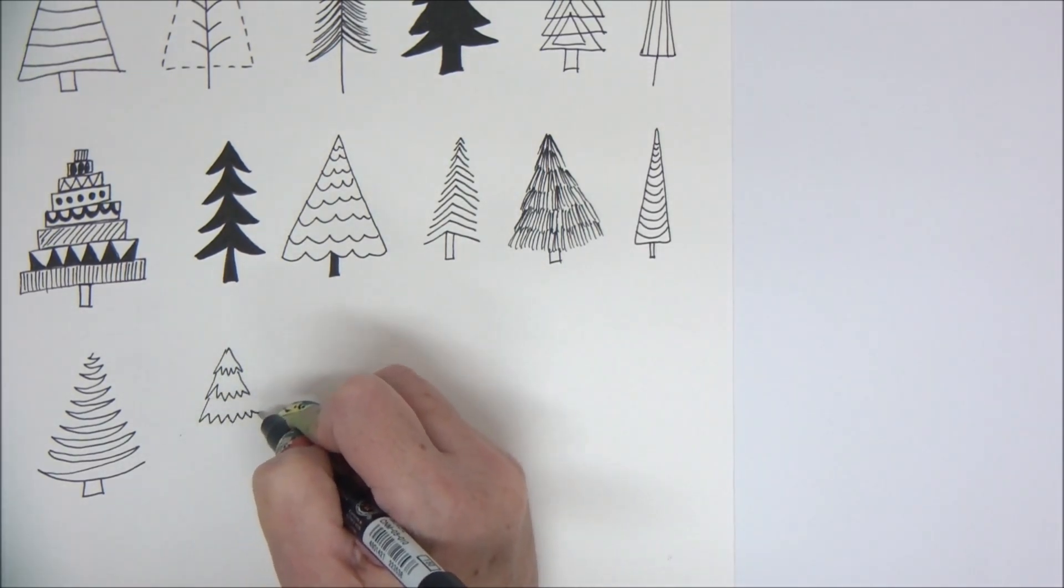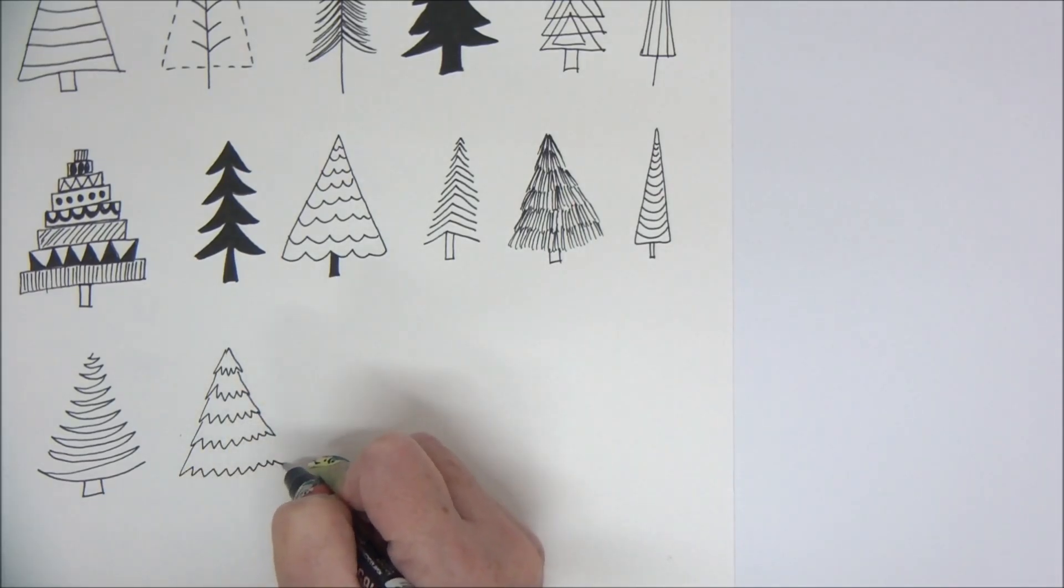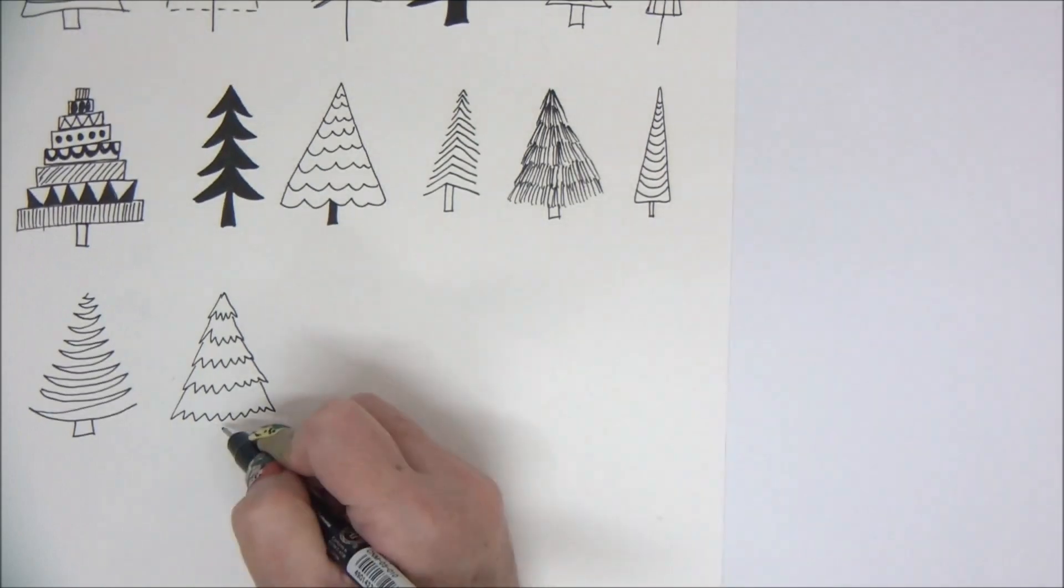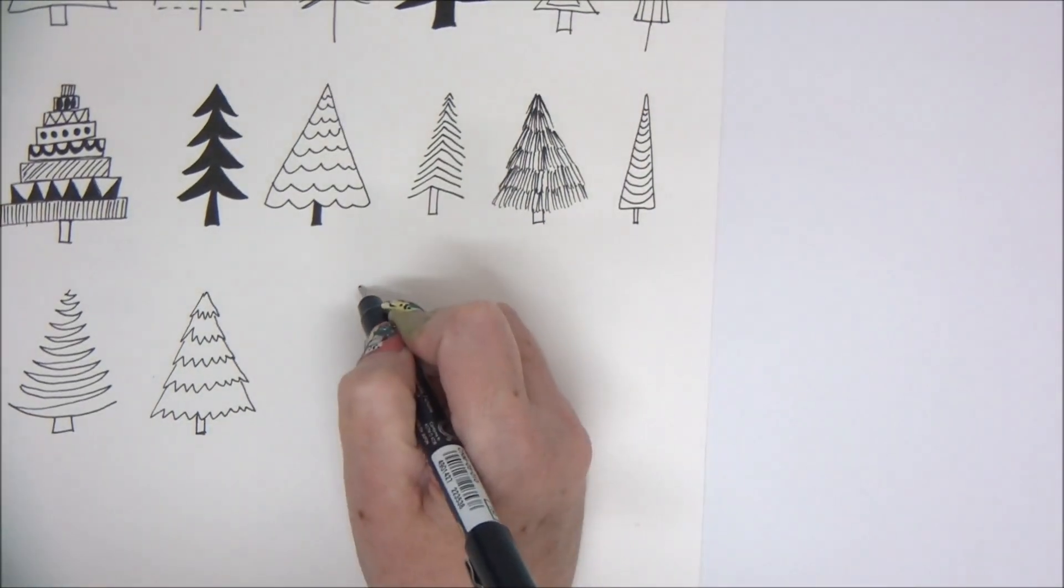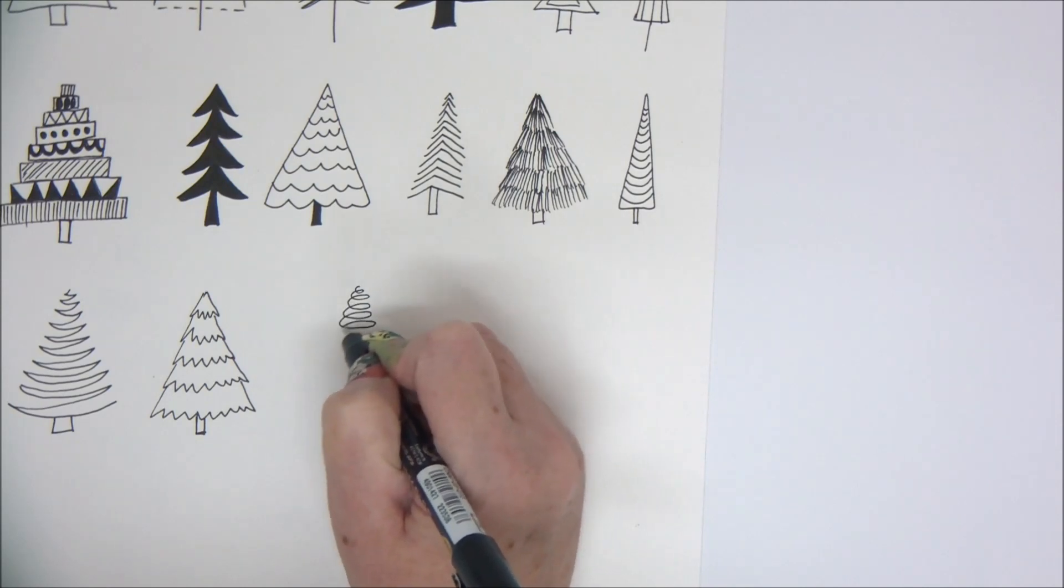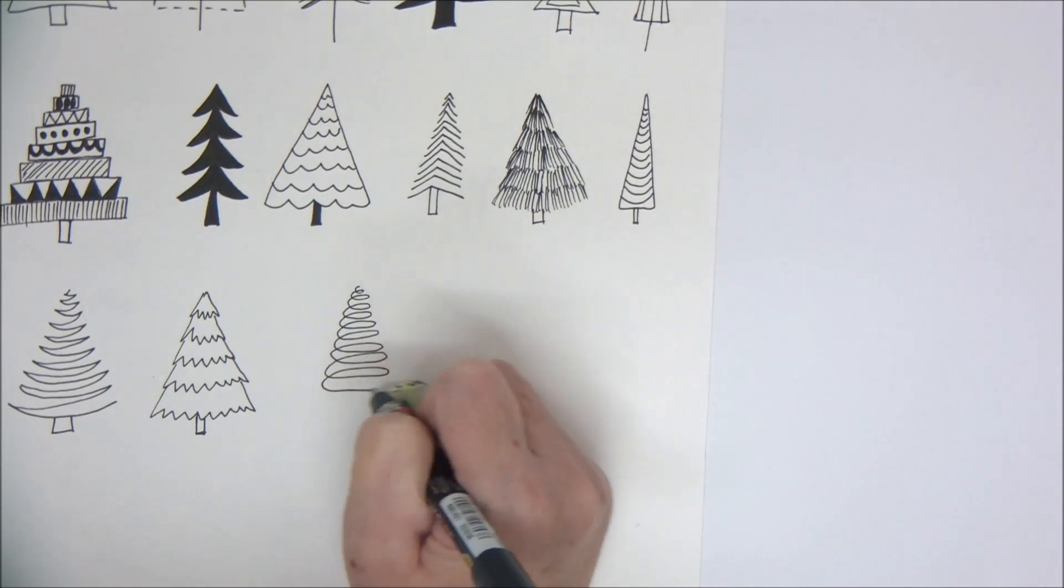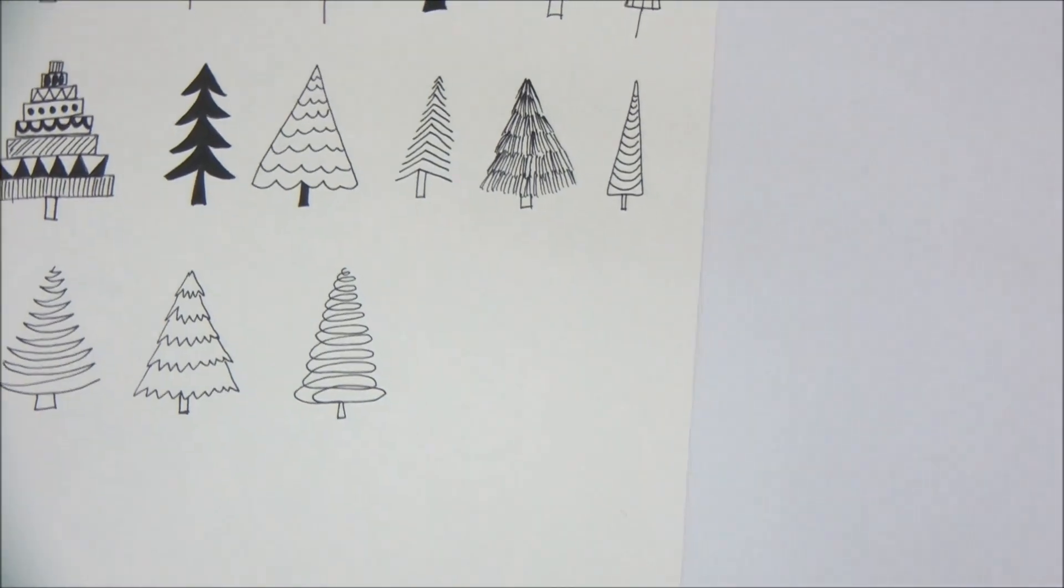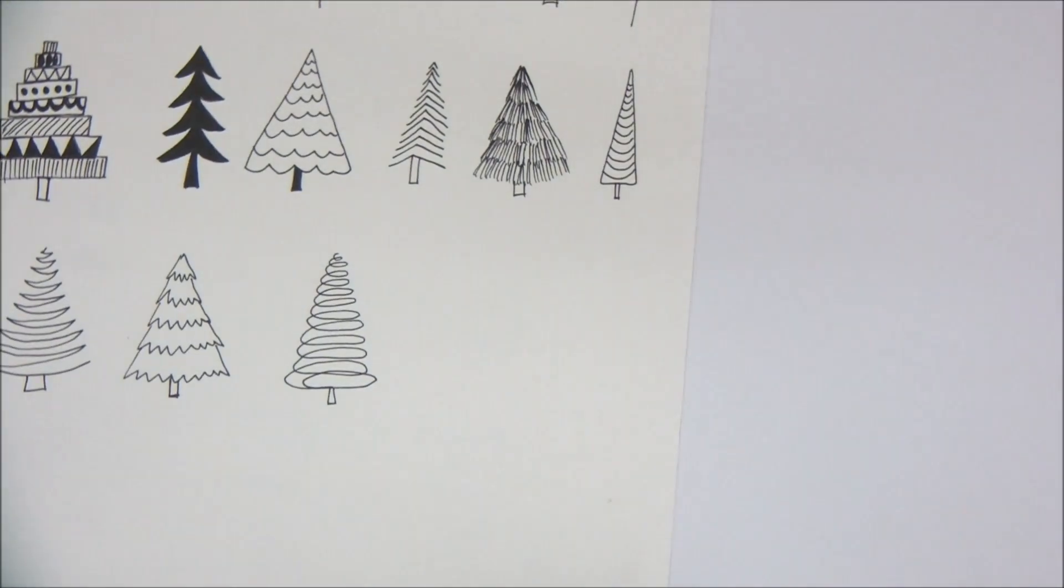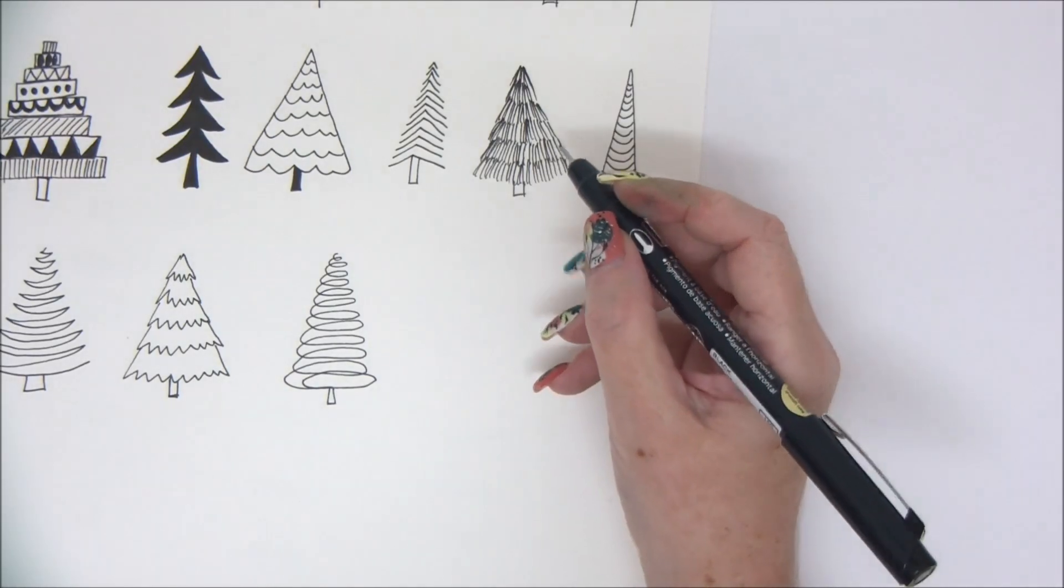This one is also a layered tree. This one is also one line—just a circled line that goes from the top to the bottom and growing as it goes.